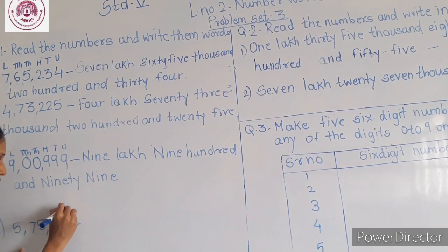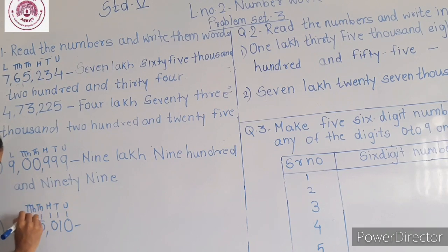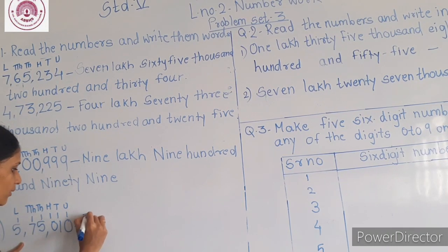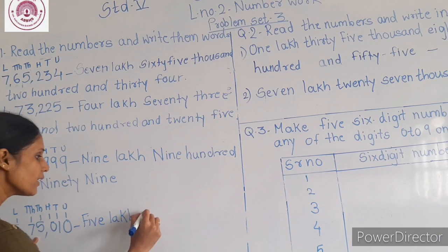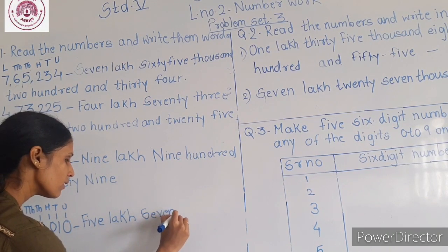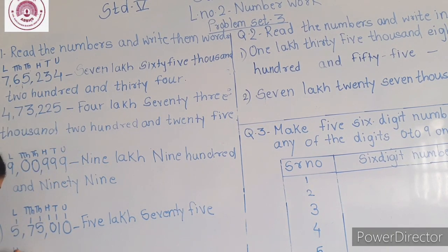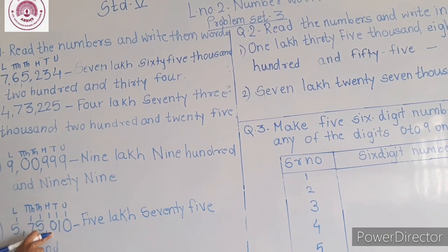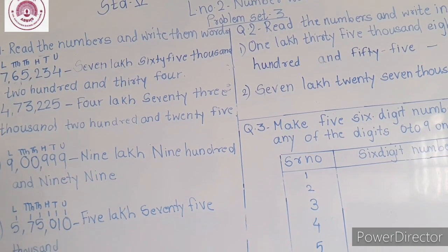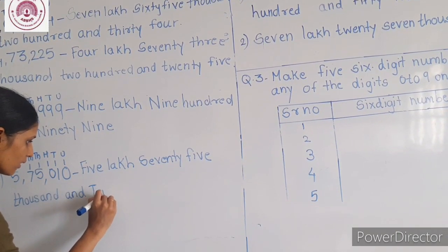Now the fourth one. This digit is in the unit place, this is in the tenth place, this is in the hundredth place, this is in the thousandth place, this is in the ten thousandth place, and this is in the lakh place. 5,000,000 — 75,000 — now in the hundreds place it is 0, so we will read the tens and units place: 75,000 and 10.